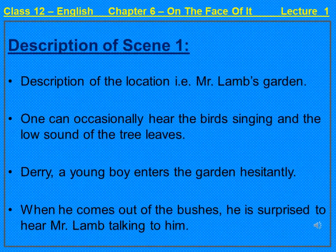The play on page number 56 begins with scene 1. In Mr. Lamb's garden, there is the occasional sound of birdsong and tree leaves rustling — rustling means whispering or producing a low sound. Derry's footsteps are heard as he walks slowly and tentatively — tentatively means hesitantly or without confidence — through the long grass. He pauses, then walks again.